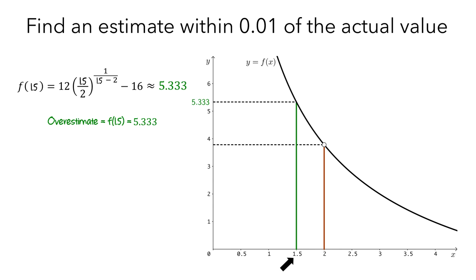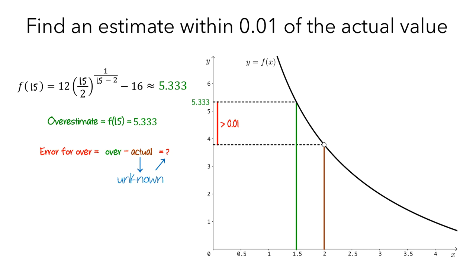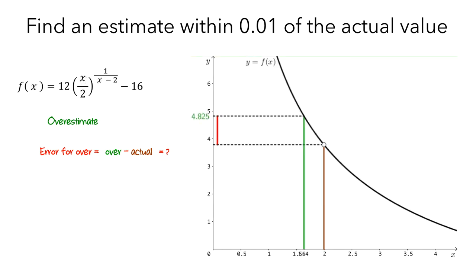To determine how far off our estimate is from the actual value, we can consider the error for the estimate — that is, the difference between the overestimate and the actual height of the hole. But since the actual height of the hole is unknown, the size of this error is also unknown. On a graph, we can label the error as the vertical distance between the height of the hole and the overestimate. It's pretty obvious that the length of this red line segment is greater than 0.01 units. So instead of picking a value for x this far away from 2, let's pick a value for x that's closer to 2.